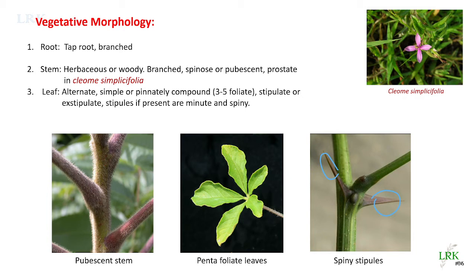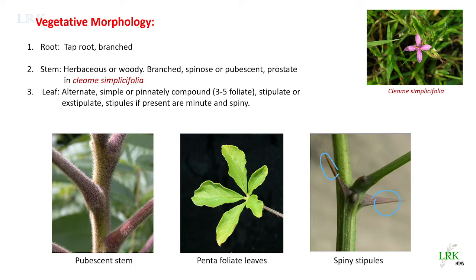In some members, stipules are modified into spines. The spines at the leaf base are actually modified stipules. Leaves are simple in Maerua arenaria and Cleome simplicifolia, but palmately compound in Crataeva and Cleome gynandra. Leaves are alternate. Leaf lamina is rectangular, lanceolate, ovate, or linear. Apex may be acute or hairy, and venation is reticulate. If compound, the leaves are palmately compounded pentafoliate leaves, as seen in this family.